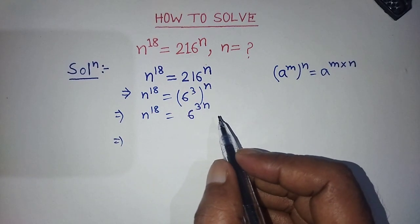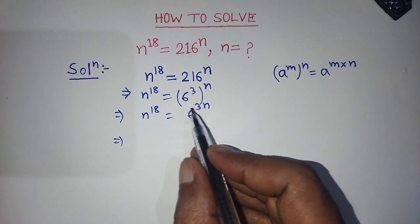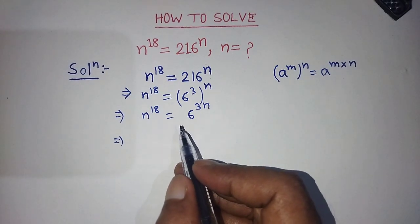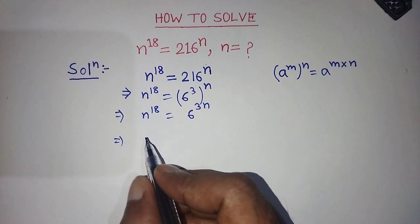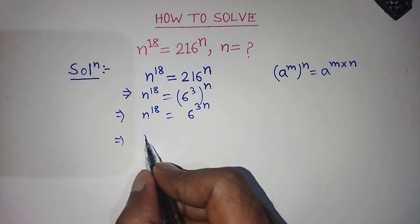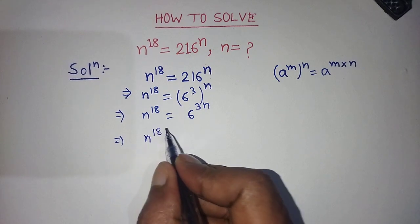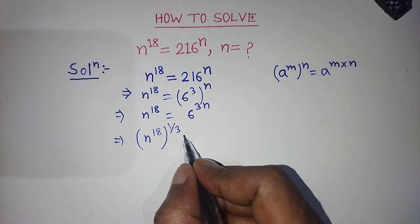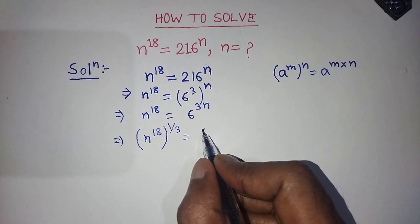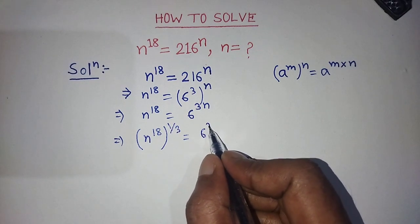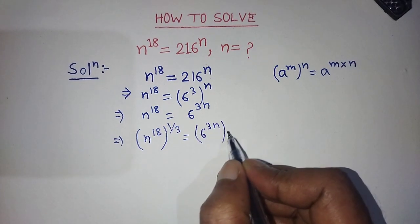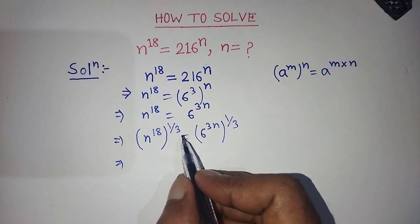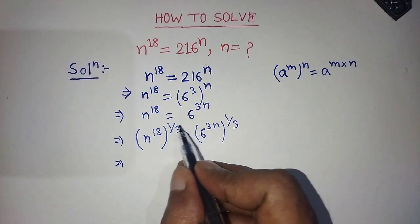To find the value of n, we take power 1 by 3 on both sides. So on the left hand side we write n to the power 18, whole to the power 1 by 3, is equal to on the right hand side 6 to the power 3n, whole to the power 1 by 3. Taking the power 1 by 3 on both sides, we get this term.